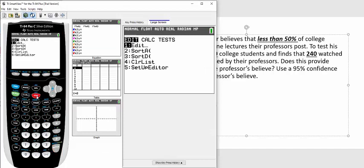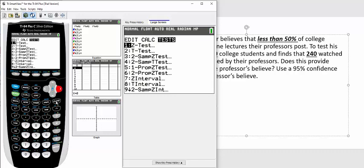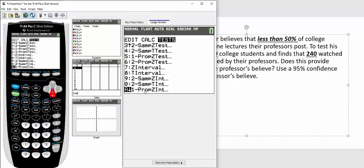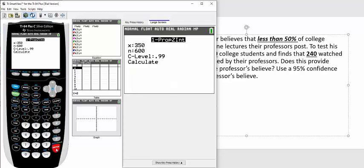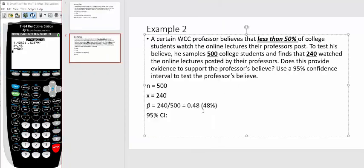I'm going to hit STAT, scroll over to TESTS, go down to 1-prop z int, and hit enter. I had 240 students who watched the videos out of 500 students. I have to change my confidence level to 0.95, then hit calculate. I get it could be anywhere from 0.436 to 0.523.